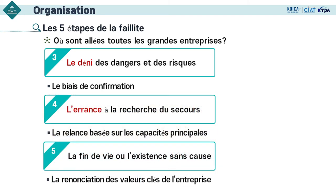La troisième étape : on nie la possibilité des dangers et des risques — c'est le biais de confirmation. Il s'agit d'équiper un filtre dans les oreilles : on accepte ce qui nous plaît et ignore ce qui ne nous plaît pas. Après cette étape de déni, il y a l'étape où on erre à la recherche du secours et enfin l'étape de fin de l'existence.